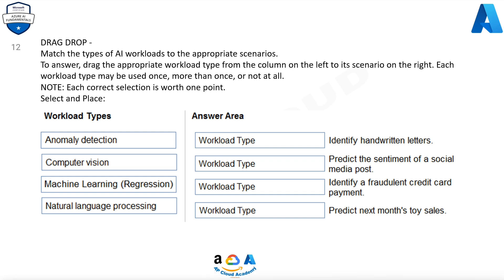Drag and drop. Match the types of AI workloads to the appropriate scenarios. To answer, drag the appropriate workload type from the column on the left to its scenario on the right. Each workload type may be used once, more than once, or not at all. Note, each correct selection is worth one point. Select and place.